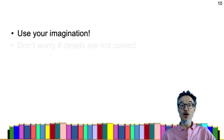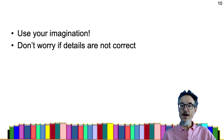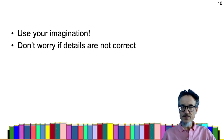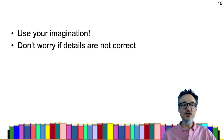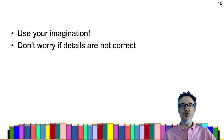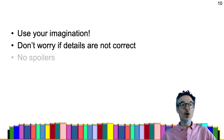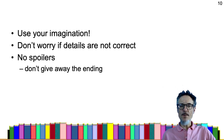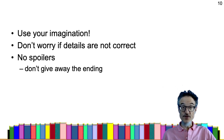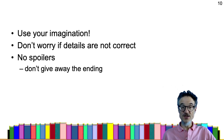When you're writing, I'd like you to use your imagination. Don't worry if the details are not correct — you don't have to go back to the book and read it again, you don't have to check details. Just use your imagination, think about the story, think about what you felt from the story and write from there. Also, no spoilers — don't tell us the ending of the story, don't give us any important plot changes or plot twists.